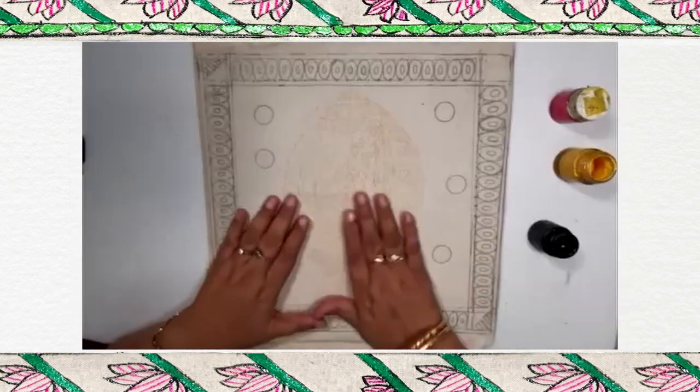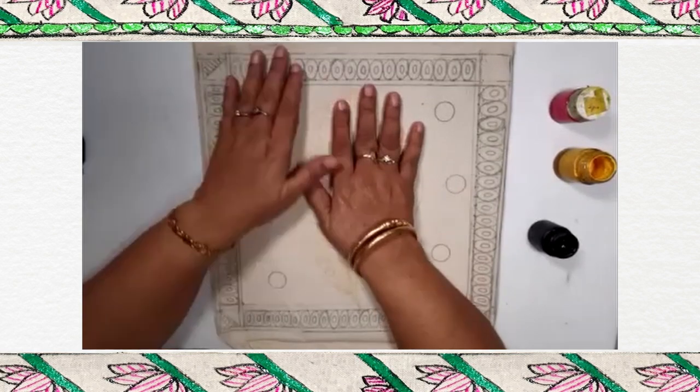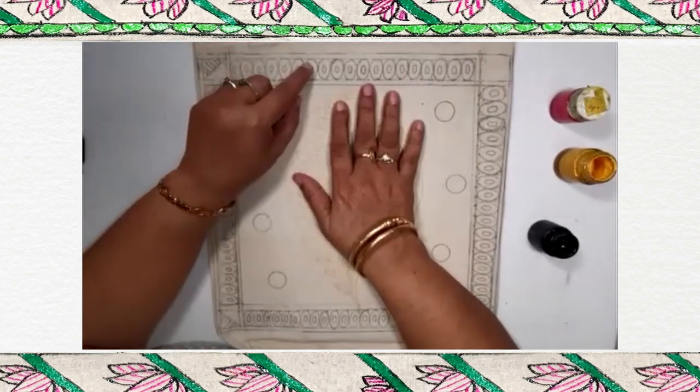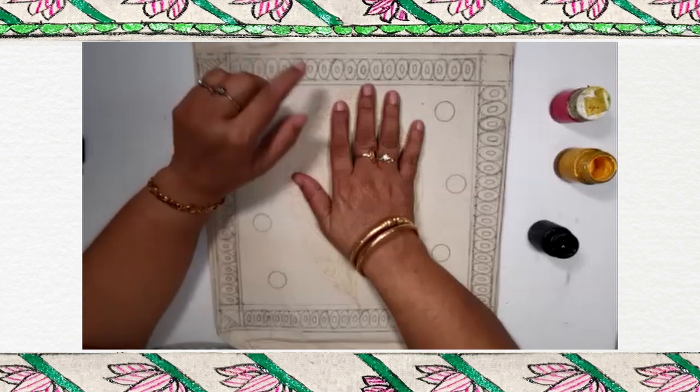So let's start. To learn conch or any other Madhubani painting, first step is to draw the border. So for border, I have taken three millimeter, then two centimeter and three millimeter. We can decide the spacing according to our object.